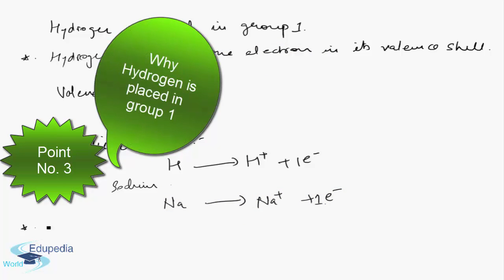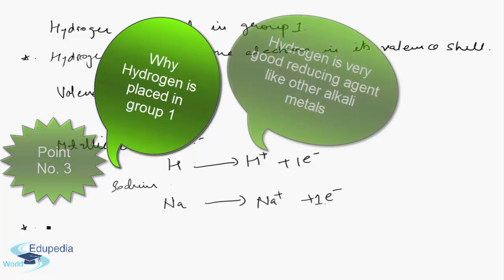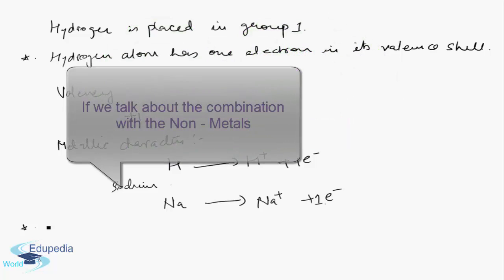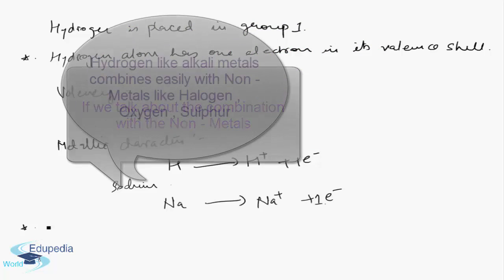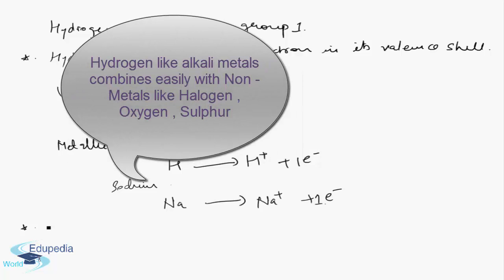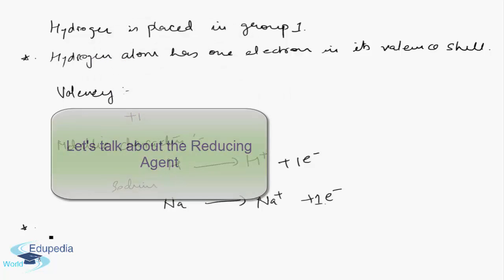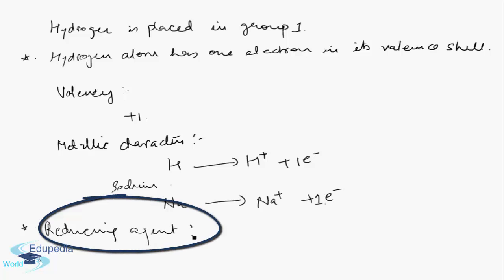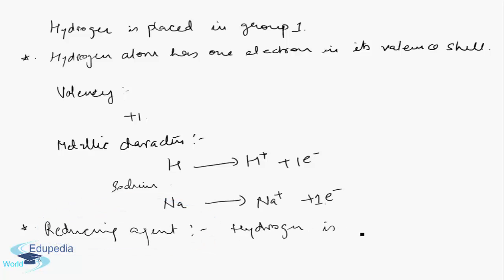Another reason hydrogen is placed in Group 1 is that it is a very good reducing agent, like other alkali metals. Also, like alkali metals, hydrogen combines easily with non-metals such as halogens, oxygen, and sulfur, as we have already discussed. Hydrogen is thus confirmed as a good reducing agent.